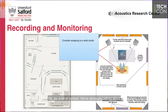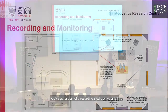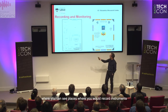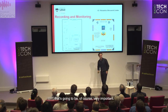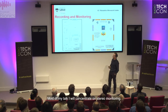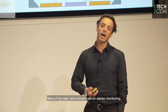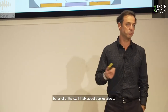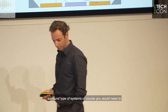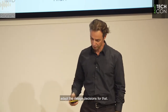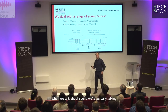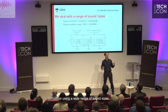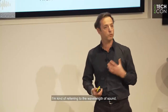We're obviously talking about rooms that we use to either record sound. You've got a plan of a recording studio on your left, where you can see places where you would record instruments and a place where you monitor the sound you're recording. Most of my talk I will concentrate on stereo monitoring, though a lot of what I discuss also applies to surround systems. One important thing is to realize that when we talk about sound, we're talking about a wide range of sound sizes — I'm referring to the wavelength of sound.